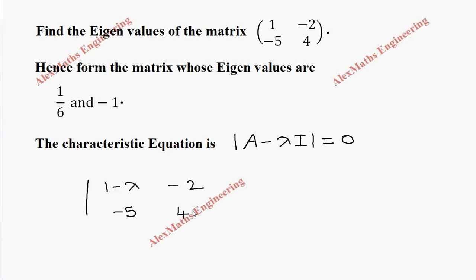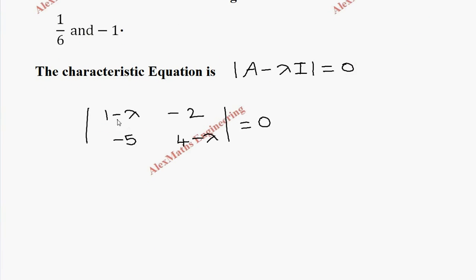We expand the determinant by making a product of the leading diagonal elements: (1 minus lambda) into (4 minus lambda), minus the product of the other elements, which becomes 10, equal to 0.